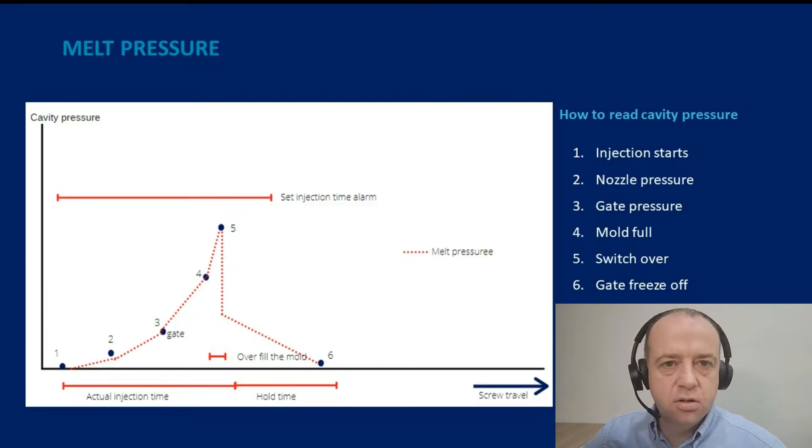On this graph here we've represented the screw travel and injection time on the x-axis, and on the y-axis we have the pressure. So we're going to consider this to be the pressure that we're reading from our molding machine, the curve on our injection molding machine.